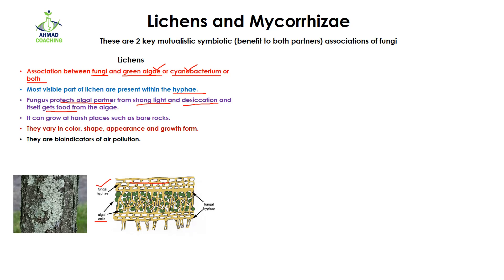In this way they both are getting benefits from each other. Lichens can grow at harsh places such as bare rocks or even trees — you can see this part here, which is actually lichen growing on a tree. Lichens may vary in color, shape, appearance, and growth form depending on which fungi is making an association with which algae or cyanobacterium. Overall, lichens are bio-indicators of air pollution.